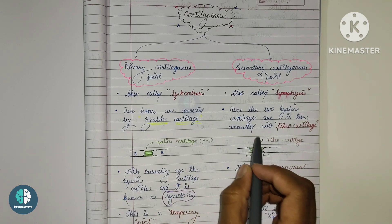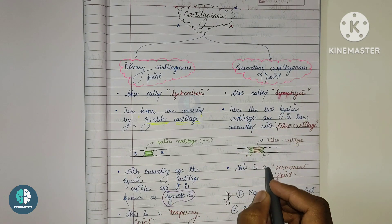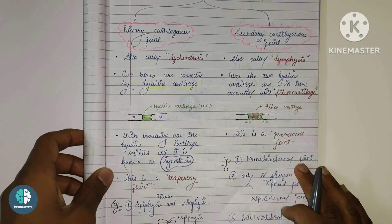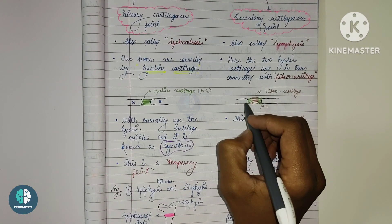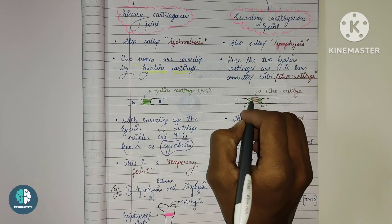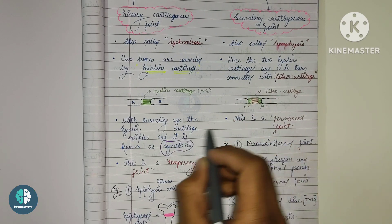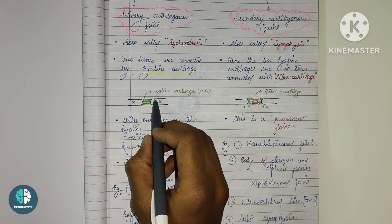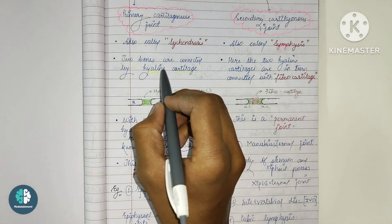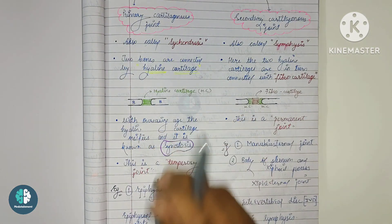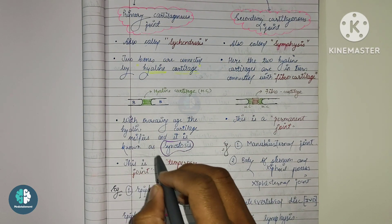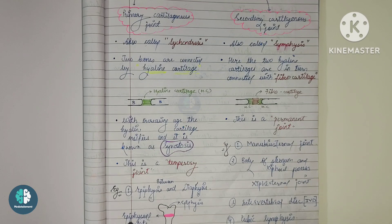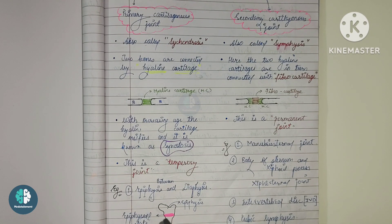The secondary cartilaginous joint is also known as a permanent joint because the fibrocartilage present between the two hyaline cartilages makes the joint permanent. In contrast, the primary cartilaginous joint is a temporary joint because it does not have any fibrocartilage — it is only loaded with hyaline cartilage. This is the basic difference between these two joints.